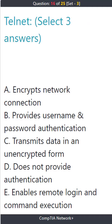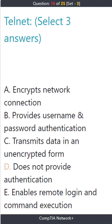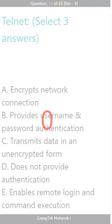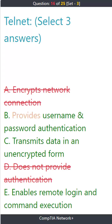Question 16. Telnet. Select three answers. A. Encrypts network connection. B. Provides username and password authentication. C. Transmits data in an unencrypted form. D. Does not provide authentication. E. Enables remote login and command execution. The correct answers are B. Provides username and password authentication, C. Transmits data in an unencrypted form, and E. Enables remote login and command execution.